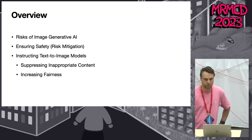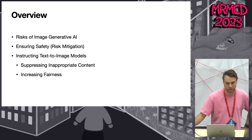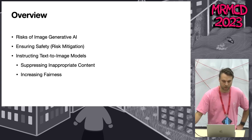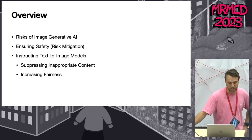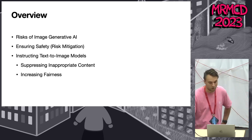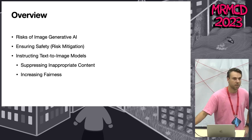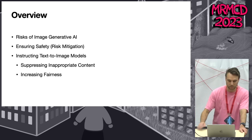I'll start with a brief overview of the risks of generative AI, especially image-generative AI. Then I'll discuss mitigation strategies in general, and go into technical details on how our methods work for instructing text-to-image models. I'll present two use cases: suppressing inappropriate content and increasing fairness.